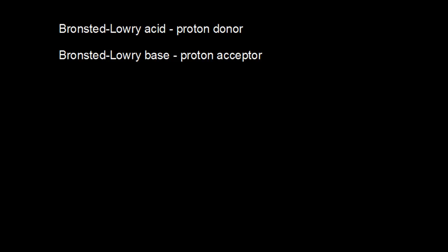In this video, we're going to look at definitions of acids and bases. The definition most commonly used in organic chemistry is a Brønsted-Lowry acid and a Brønsted-Lowry base. A Brønsted-Lowry acid refers to a proton donor, and a Brønsted-Lowry base refers to a proton acceptor.